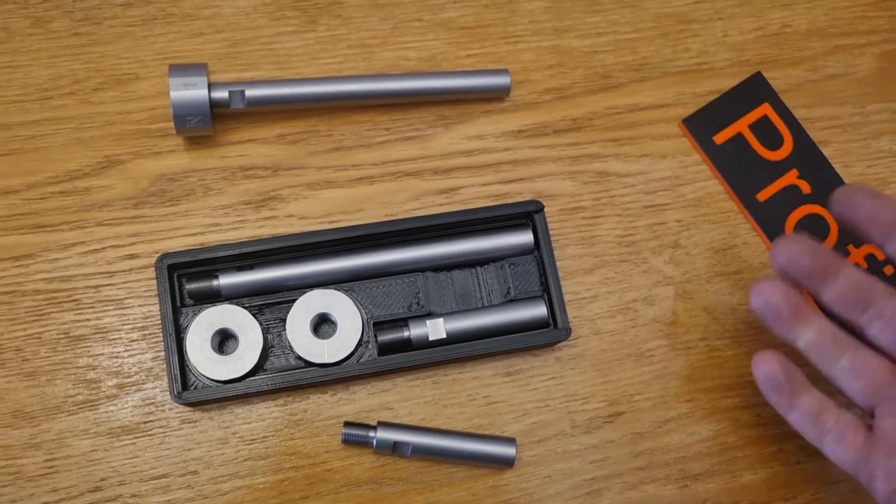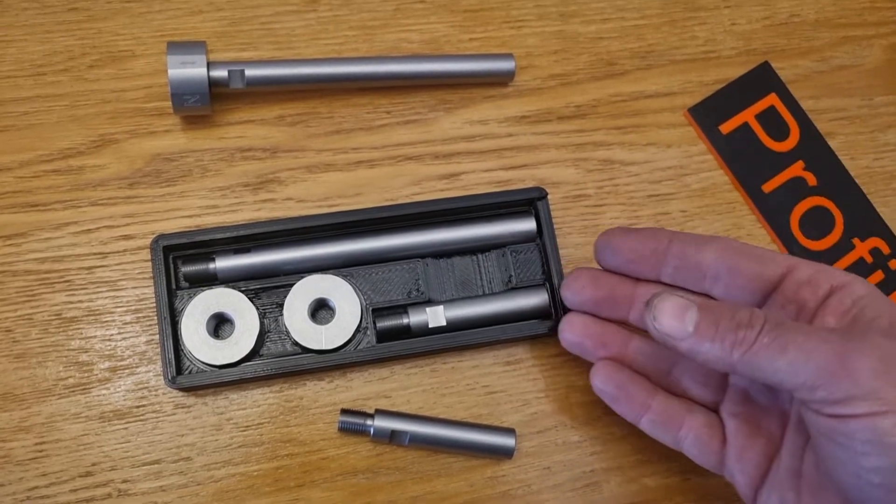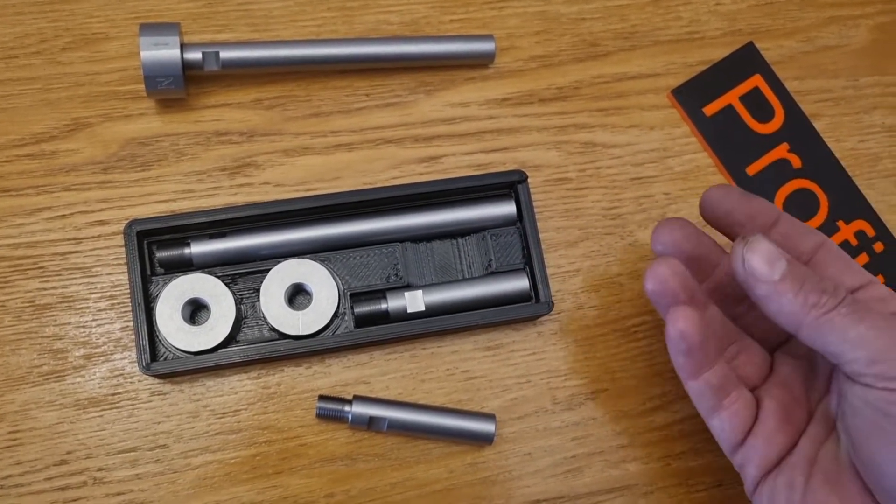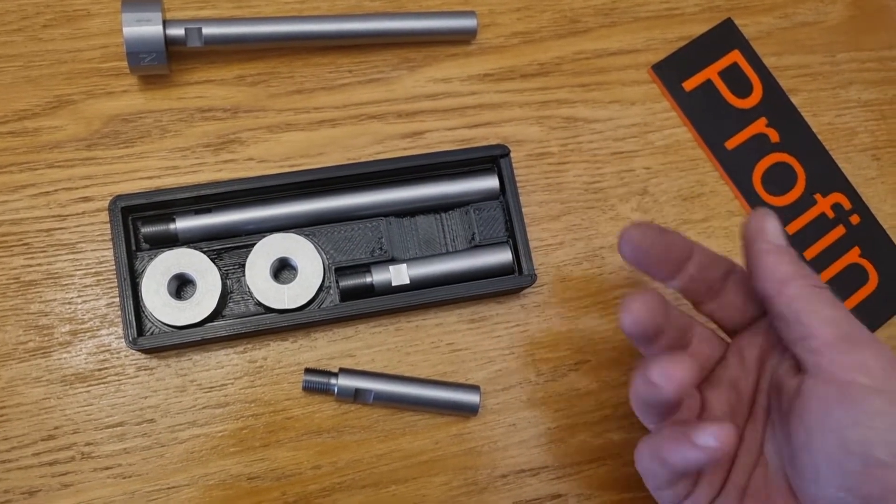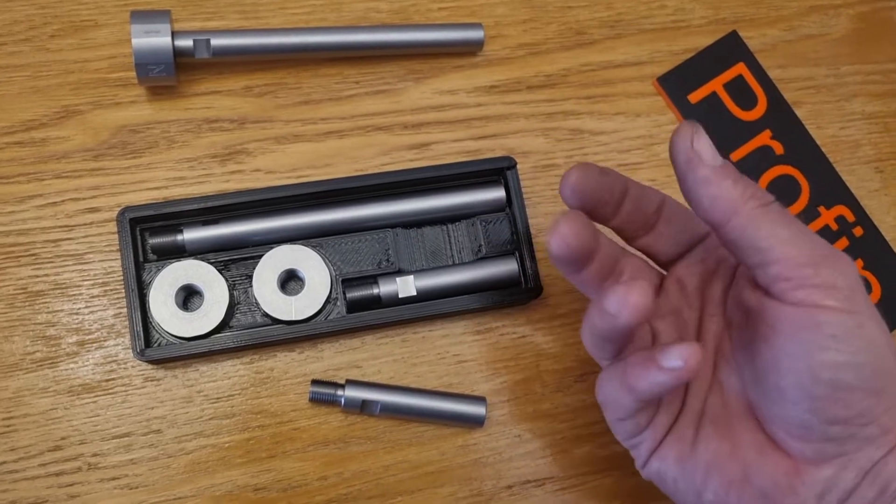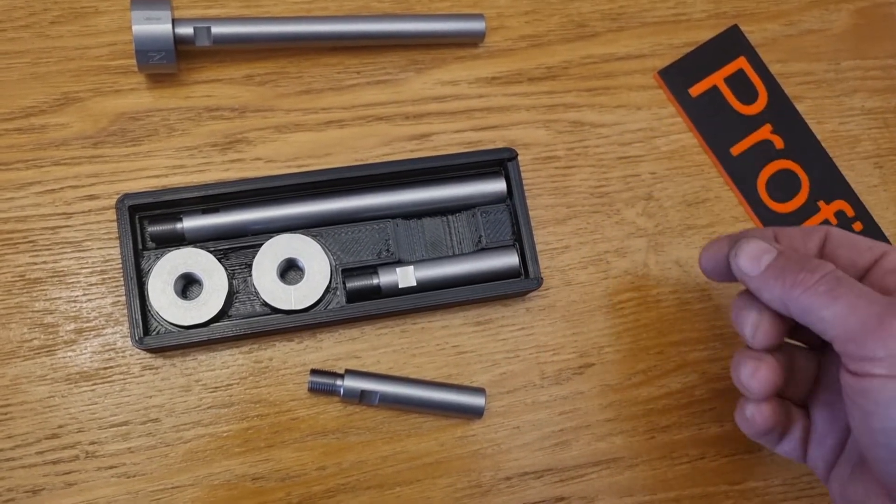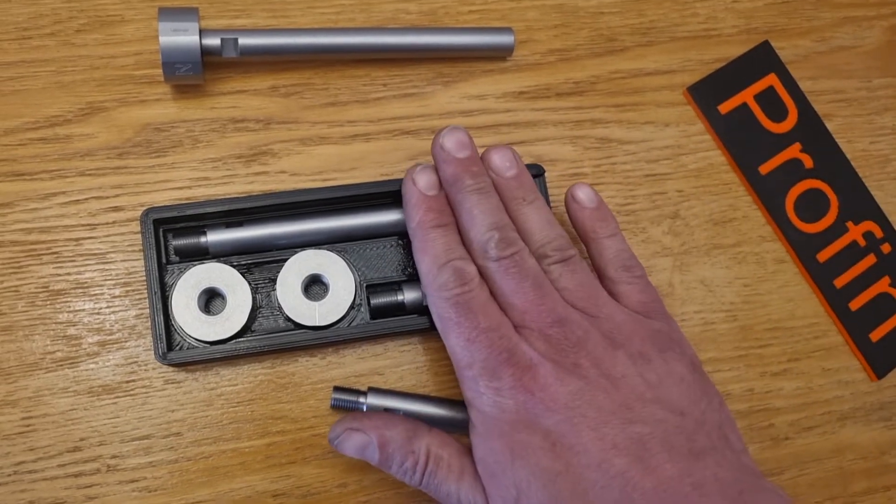Because, as I said, they're a close-fitting thread and you don't want—they've got to screw straight on. So if there's any dirt or debris in there, it'll stop it or maybe even damage it. So it's just being able to put them away.